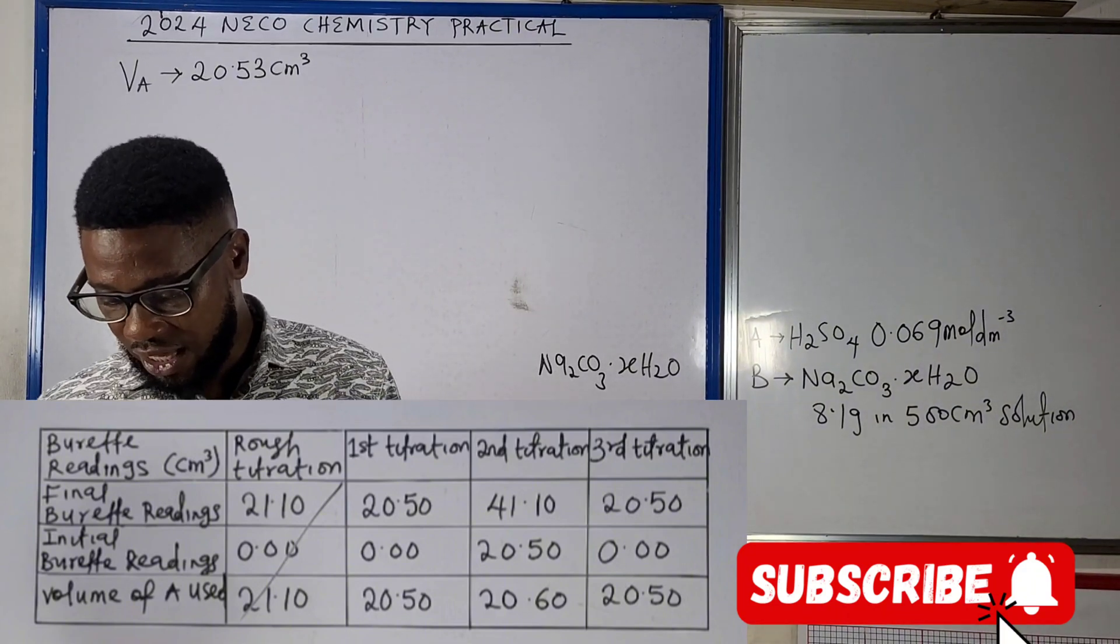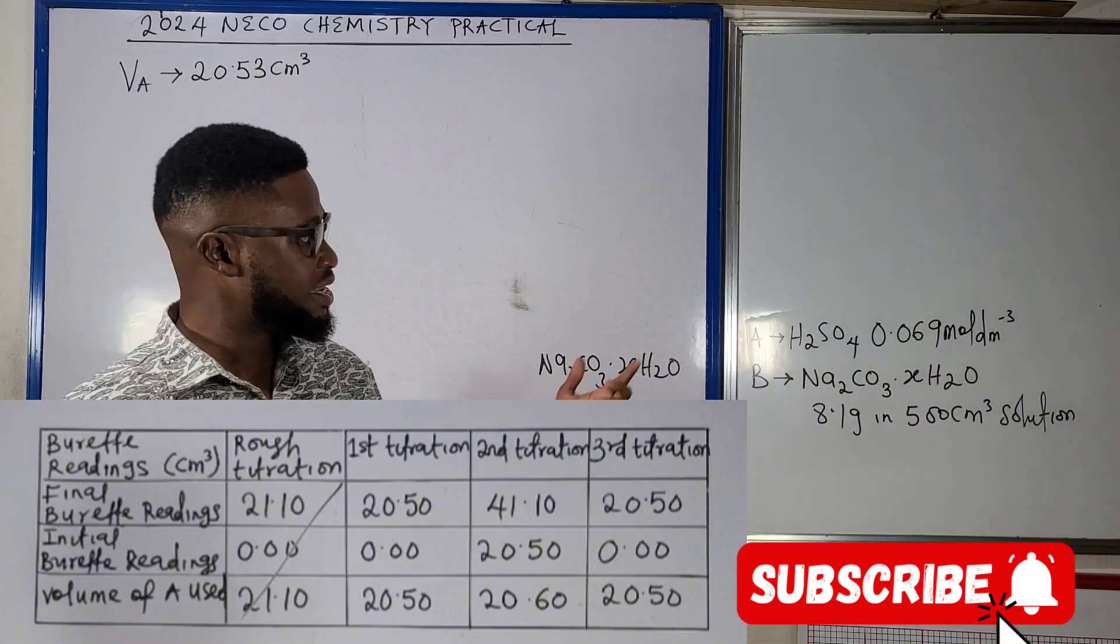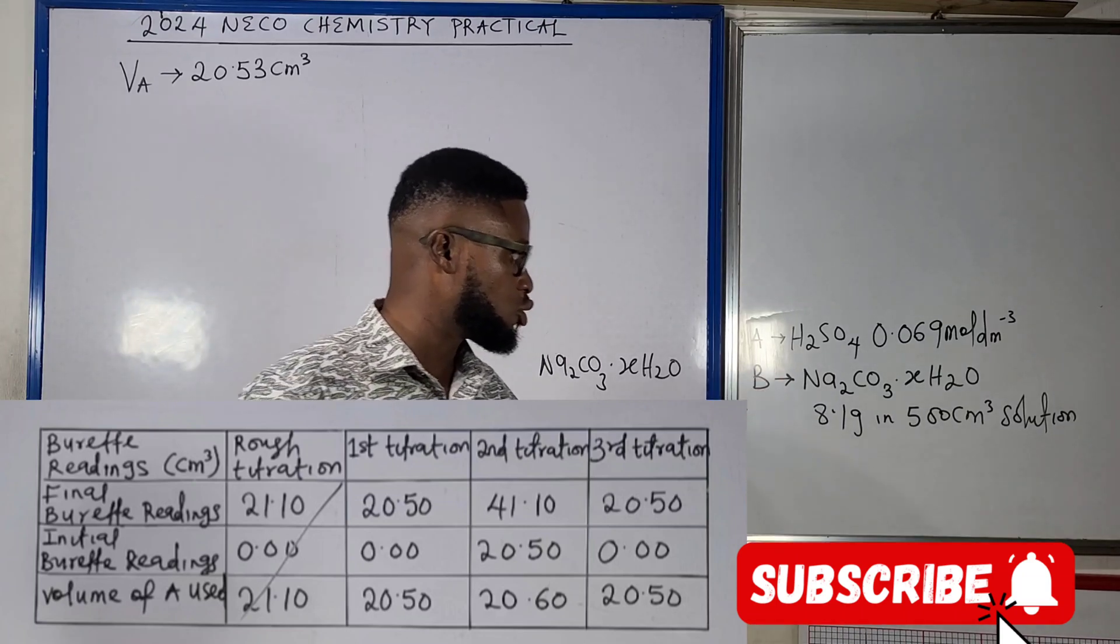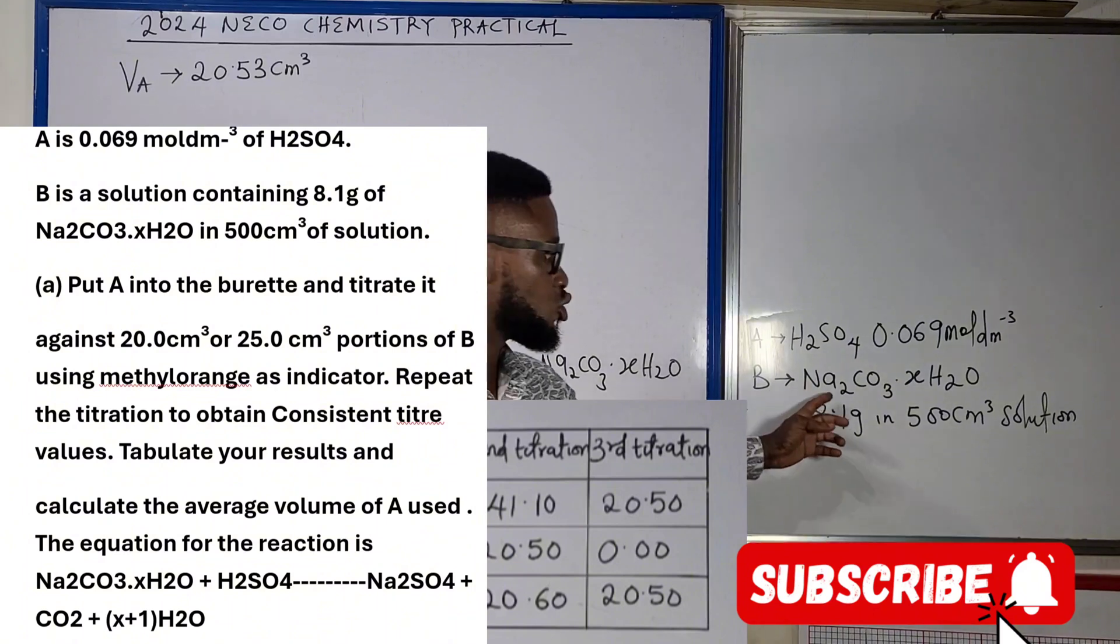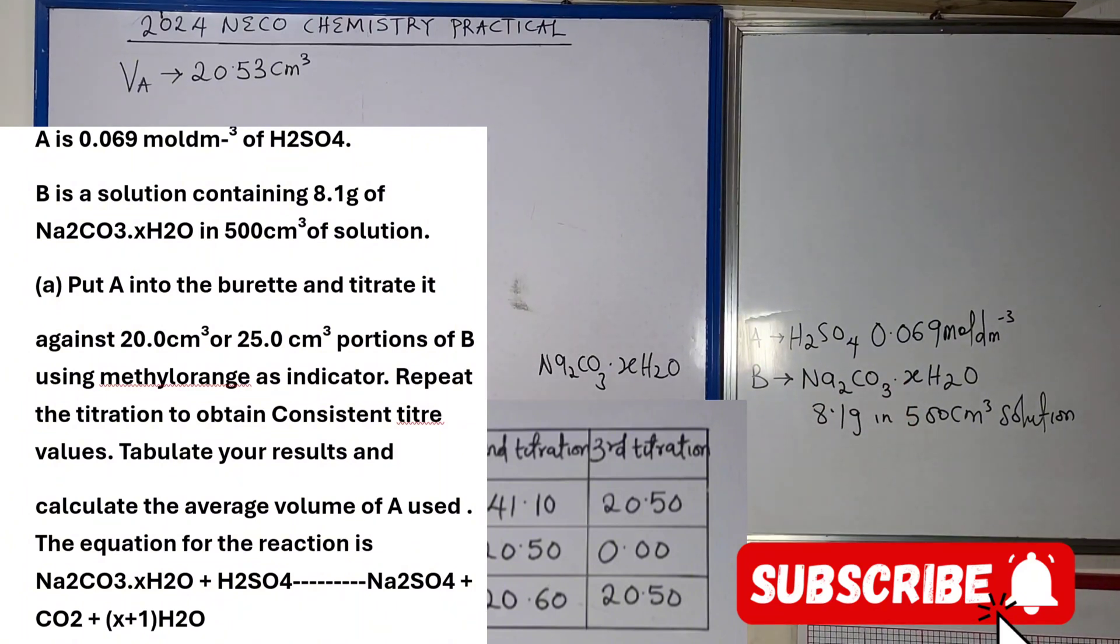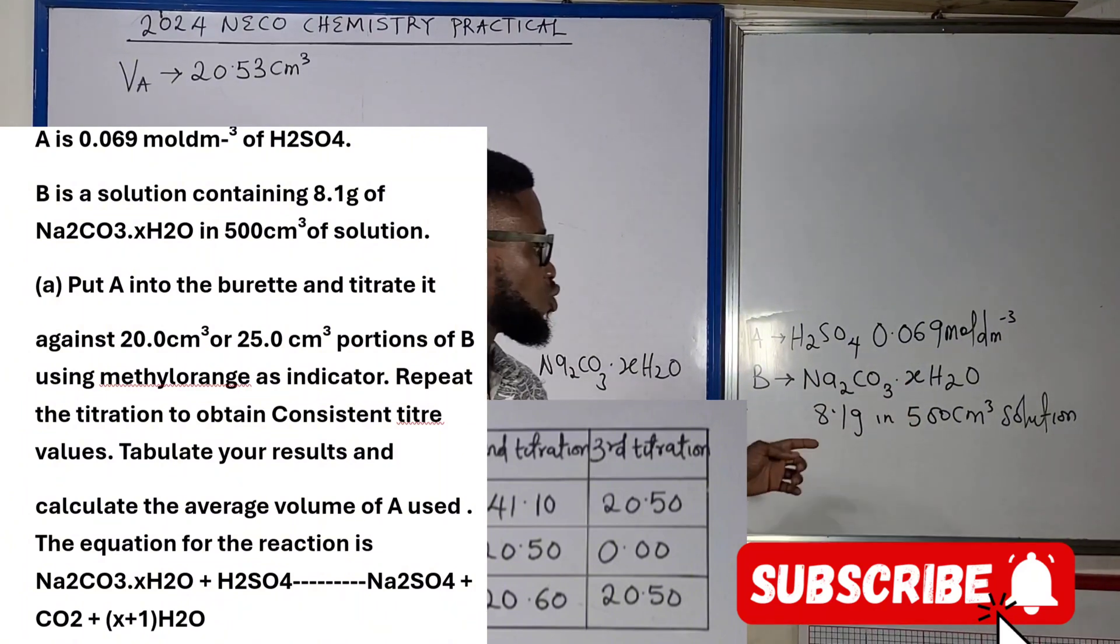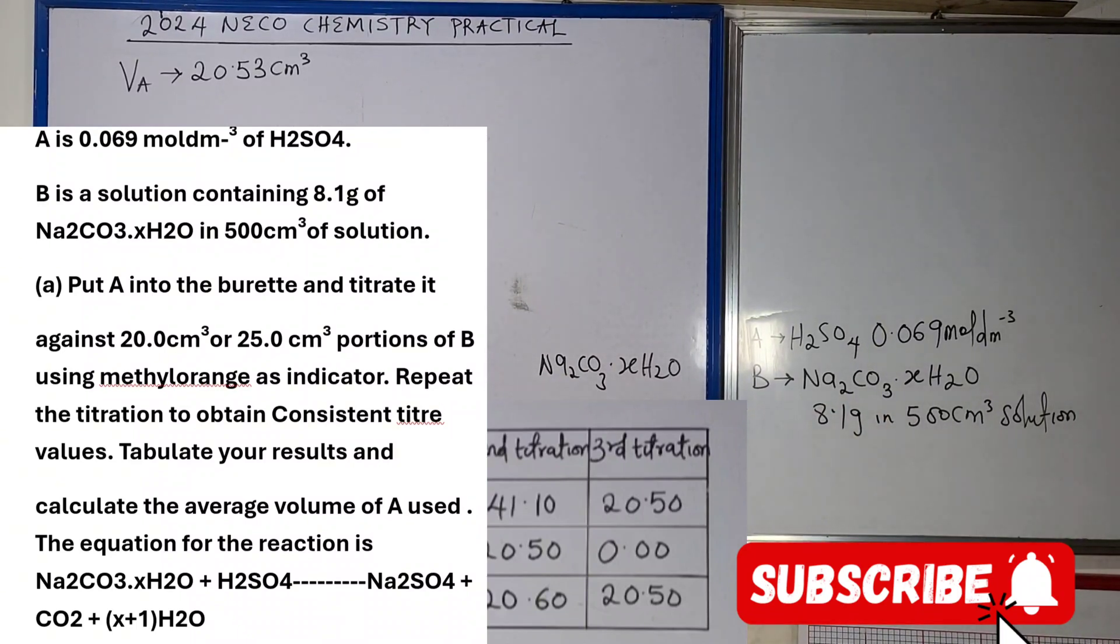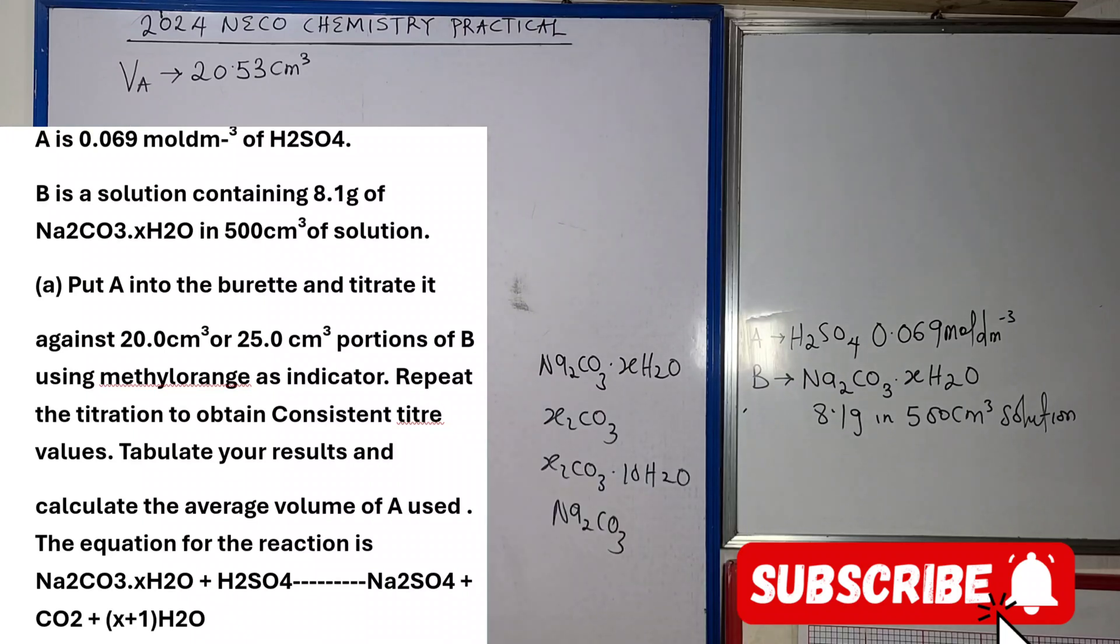In this question, as you can see on your screen, A is H2SO4 and we're given the concentration as 0.069 mole per dm cube. B is actually sodium carbonate dot xH2O, and we were told that we have 8.1 grams of that in 500 cm cube solution. All of question A is what we've done in the previous lecture video, and we've agreed that our title value should be VA equals to 20.53 cm cube.